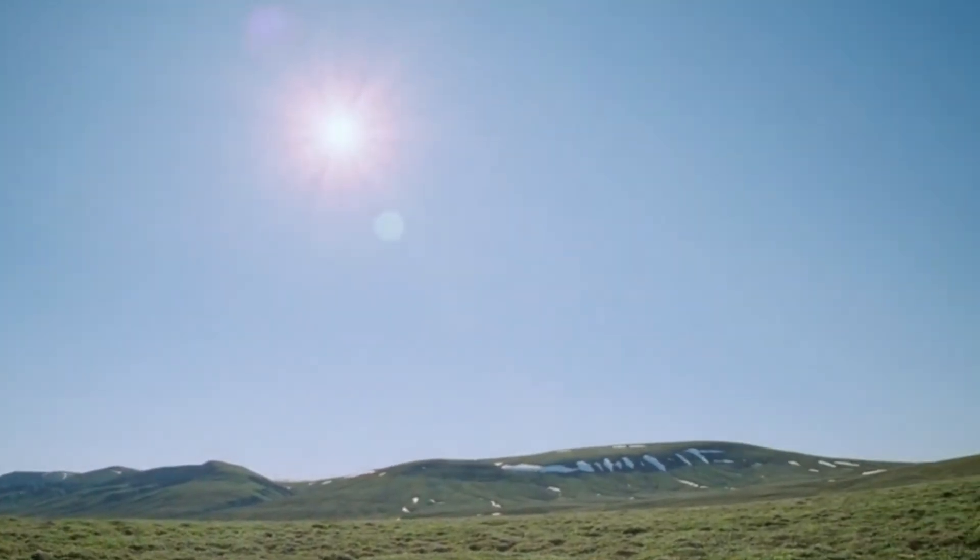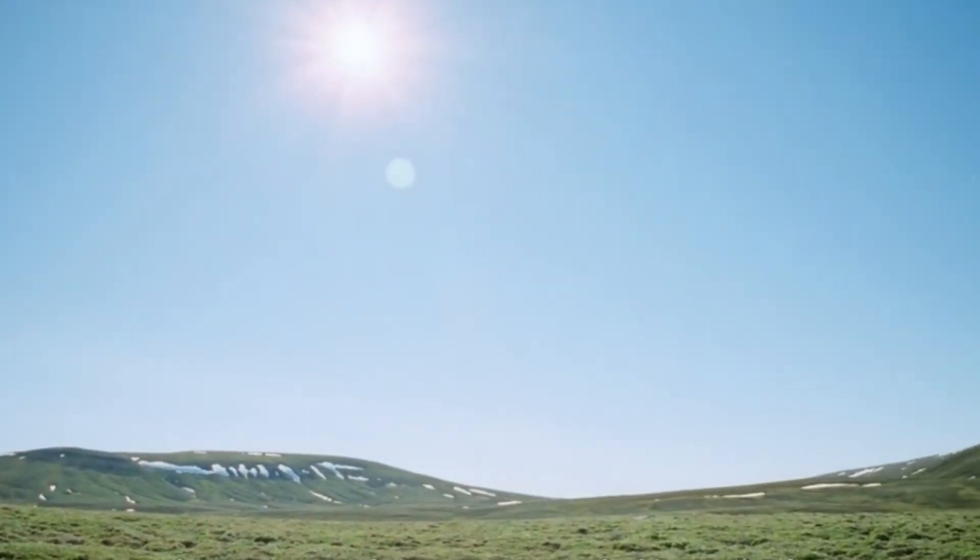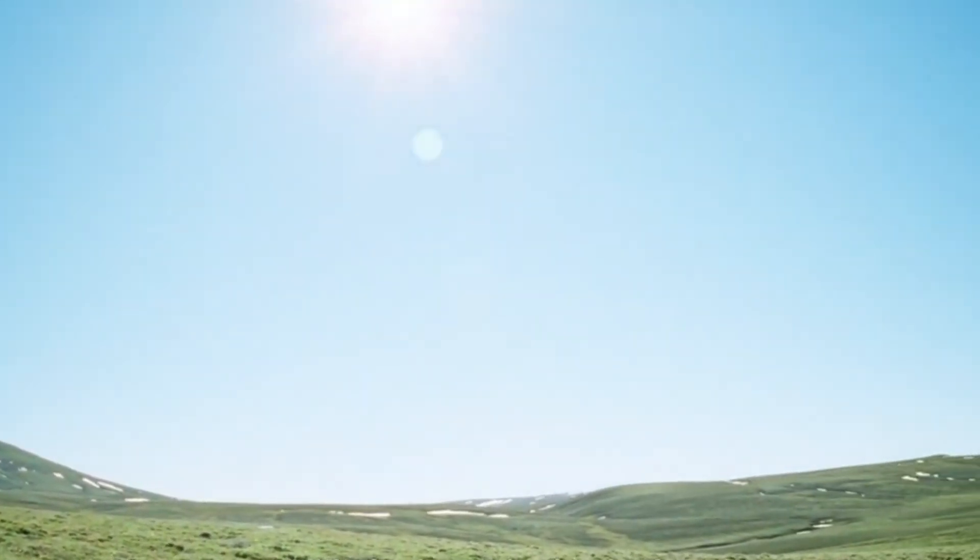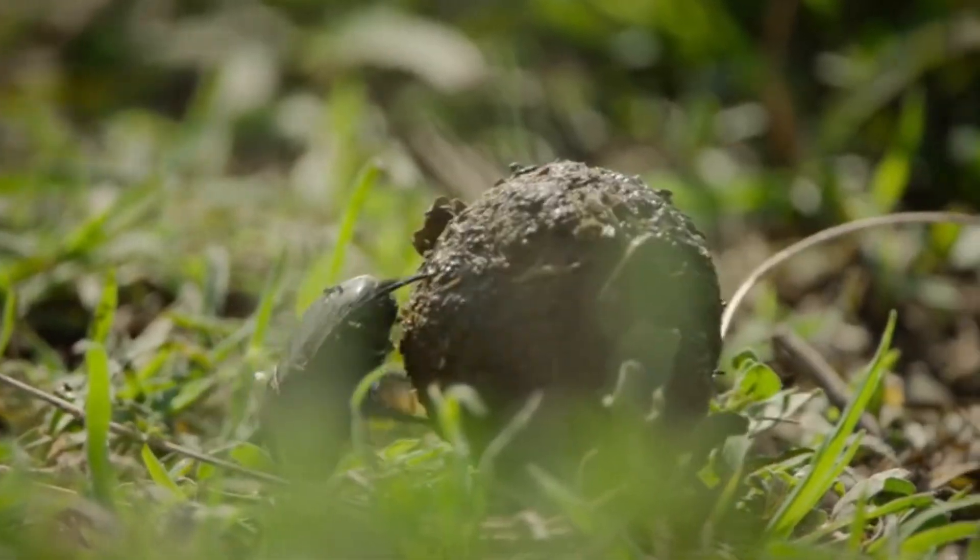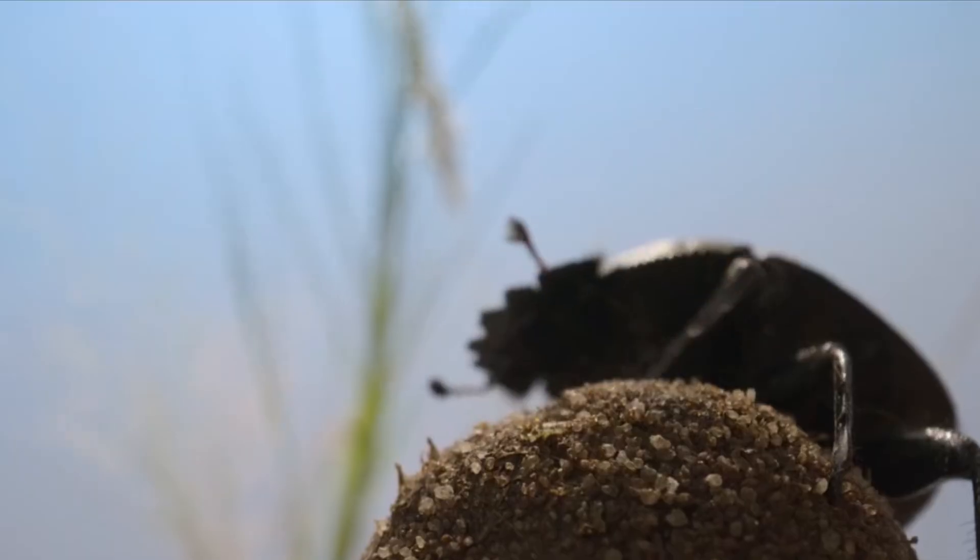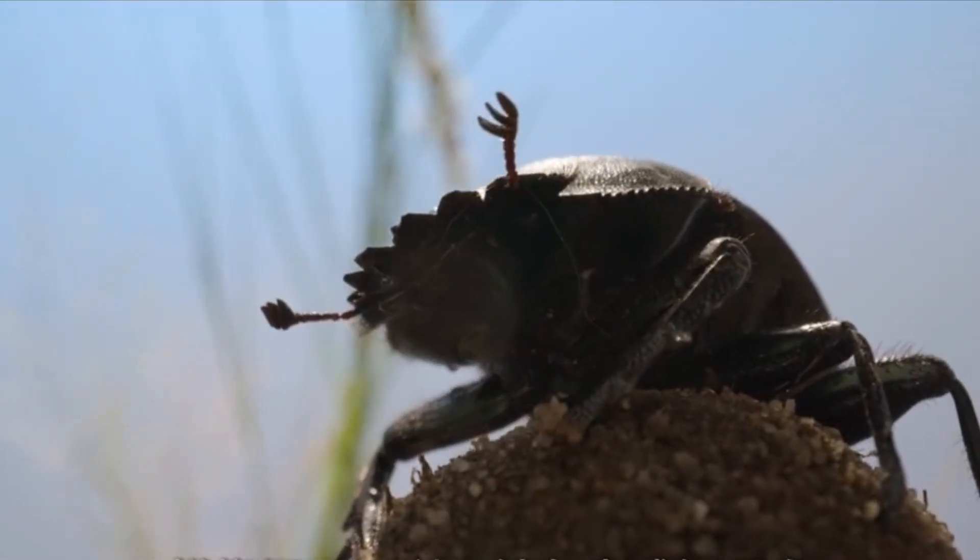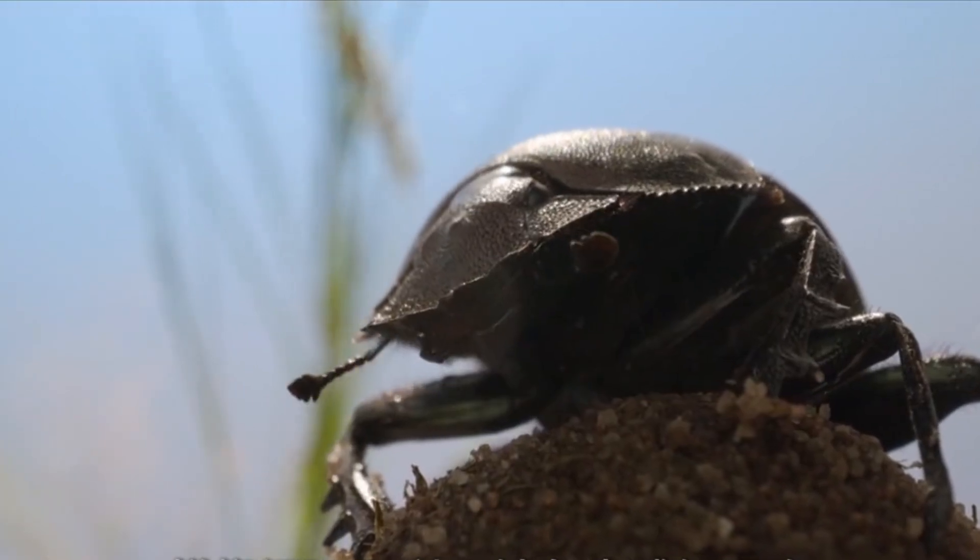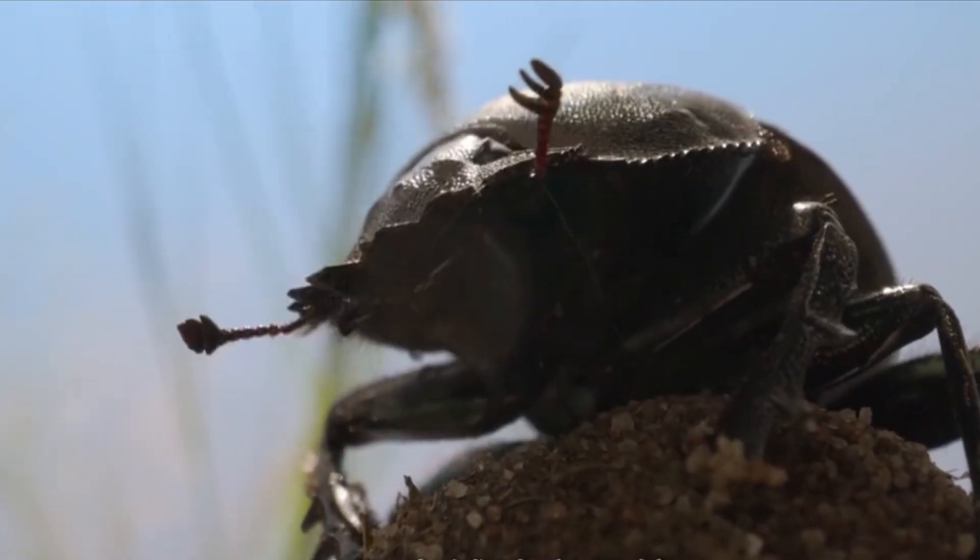However, when the sun reaches its peak at midday, it becomes a poor point of reference. So how does the beetle stay on course? Nature has equipped the dung beetle with another tool. Its sensitive antenna can detect wind direction, using the breeze as an alternative guide.